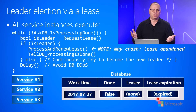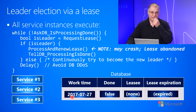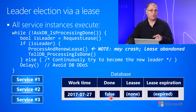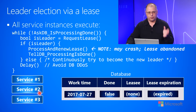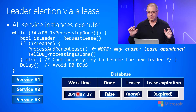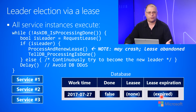Let's say that something shows up in the database on July 27th, 2017. The work is not done, so I put false in here. Currently, no service instance has a lease on this work — we're using leases here for the leader election. So there's no lease currently available on this work that needs to be done, and the lease hasn't expired yet because there is no lease at all.